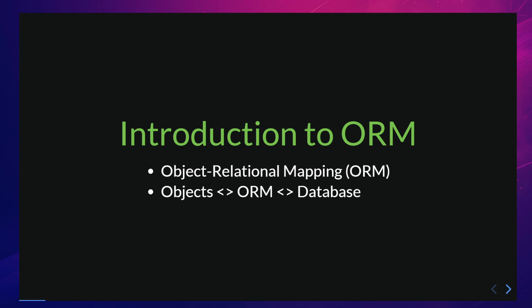Hello and welcome to my video on object-relational mapping and why an ORM is not always the best choice for developers. First, let's define what an ORM is. An ORM is a technique that allows developers to interact with databases in an object-oriented way. It maps the tables and columns in the database to objects and properties in a programming language such as PHP, Java, C-sharp and so on. This means that instead of writing SQL queries, developers can use objects and methods provided by the ORM to perform CRUD operations on the data.